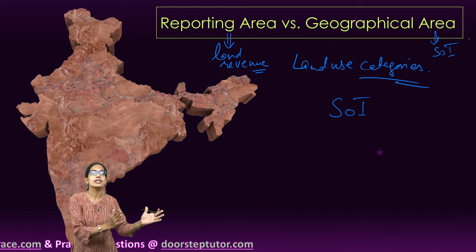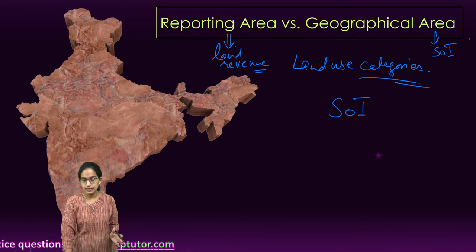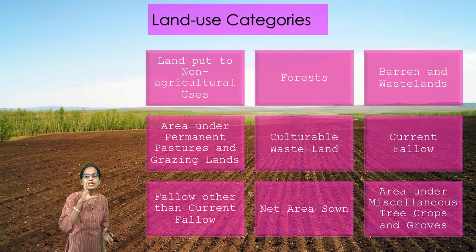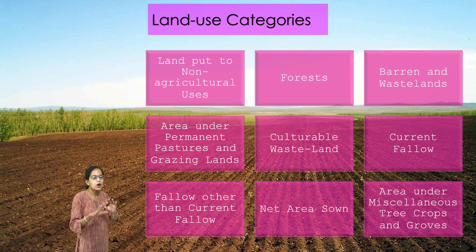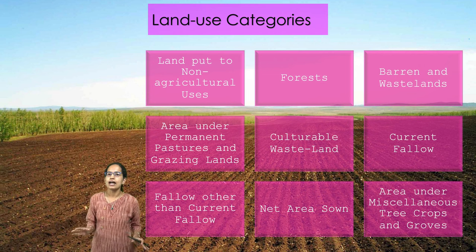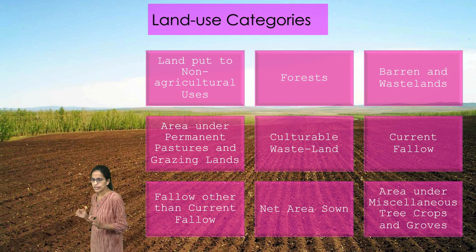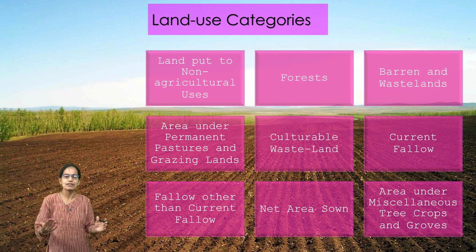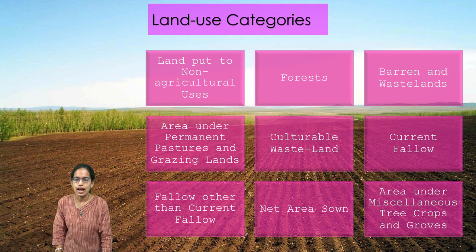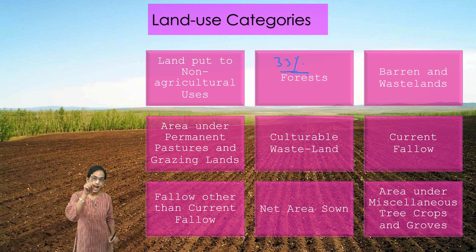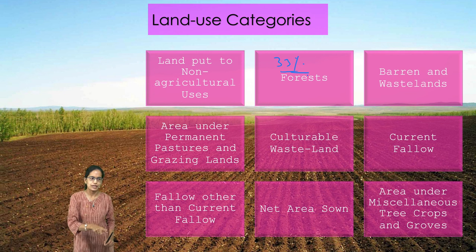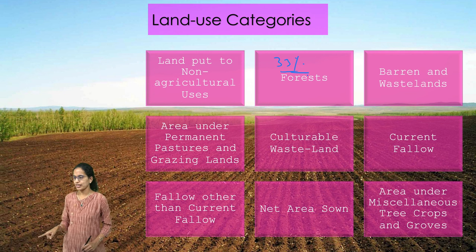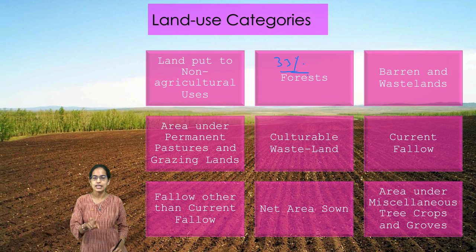Be very careful when understanding the statistics used to arrive at land use categories. Broadly, there are nine land use categories. The first one is forest. We all know that 33% of land cover should be under forest area, but the actual forest is different from the classified forest.